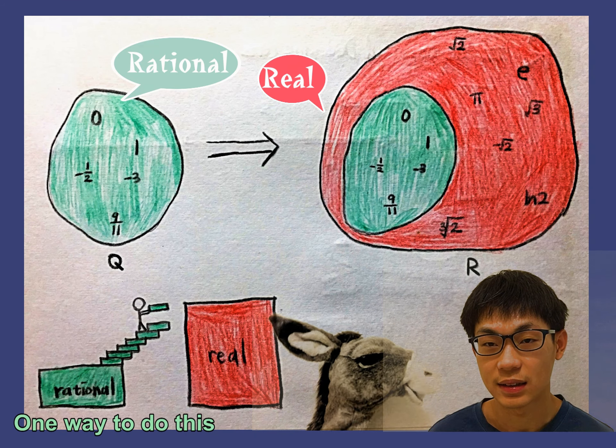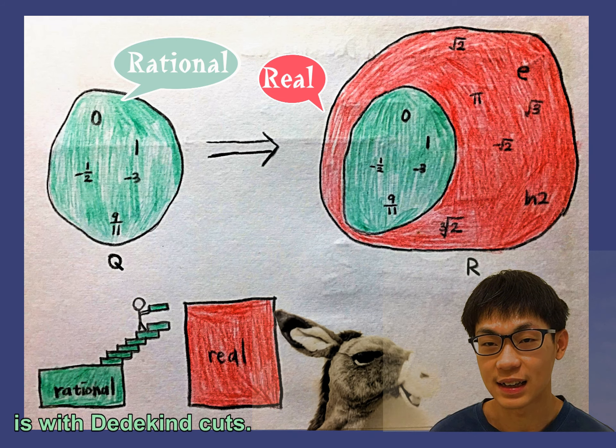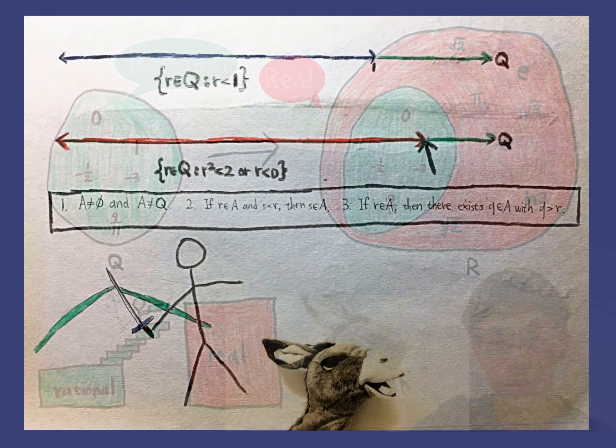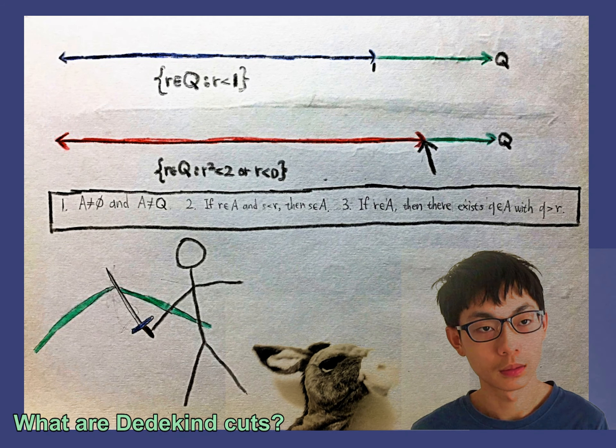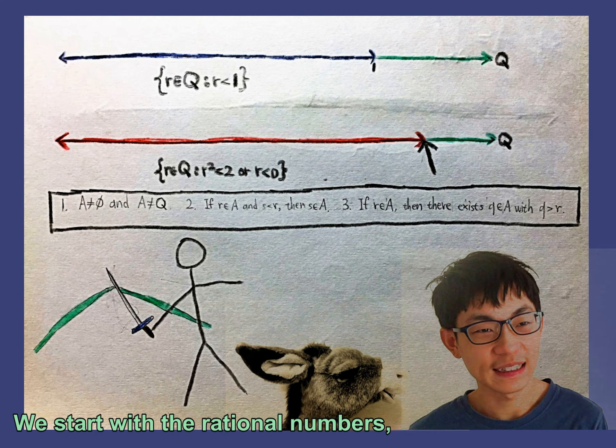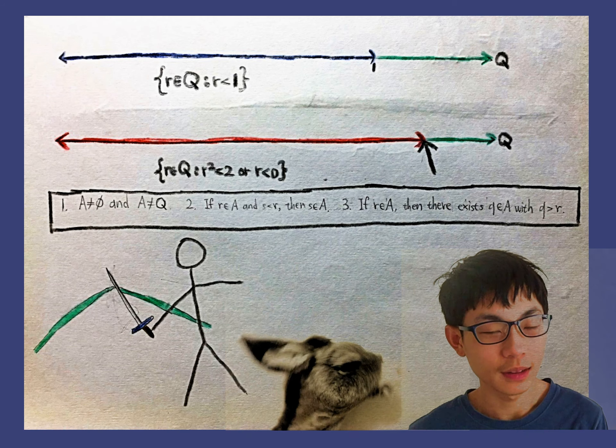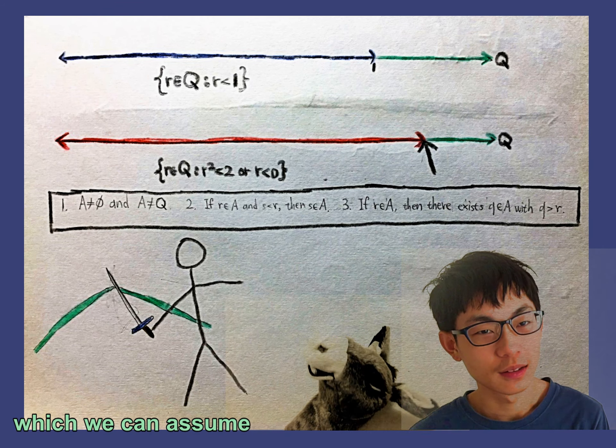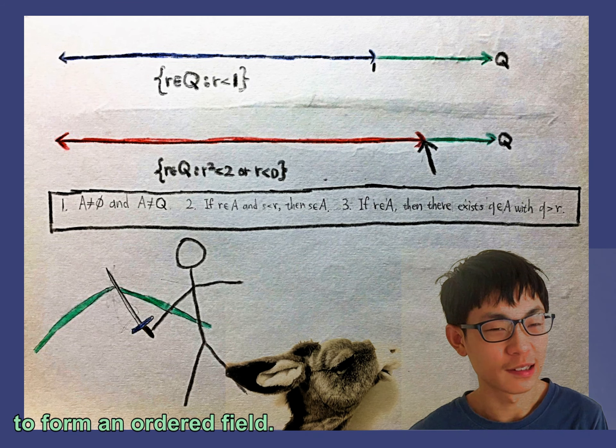One way to do this is with Dedekind cuts. What are Dedekind cuts? Can you eat them? We start with the rational numbers, which we can assume to form an ordered field.